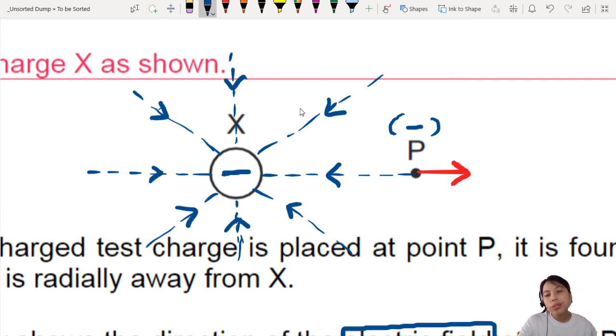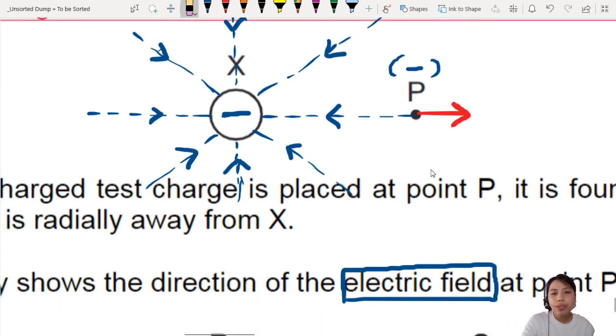So the question is asking you, where does the electric field point at when you are at P? So if you are particle P sitting here, where is the electric field pointing? Pointing to the left? So you need to find some kind of arrow that points to the left.